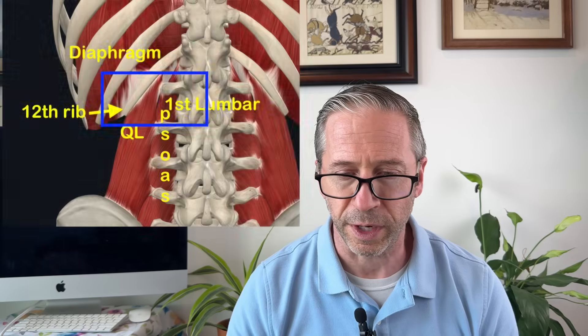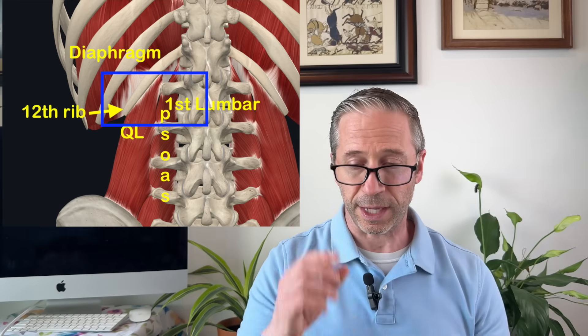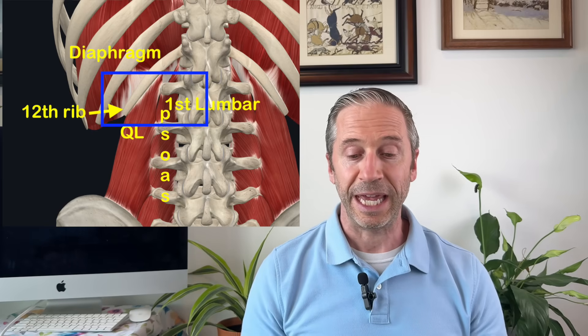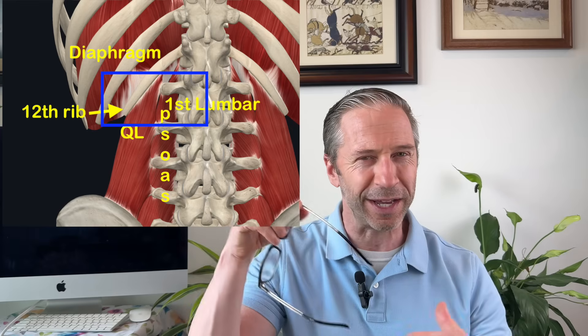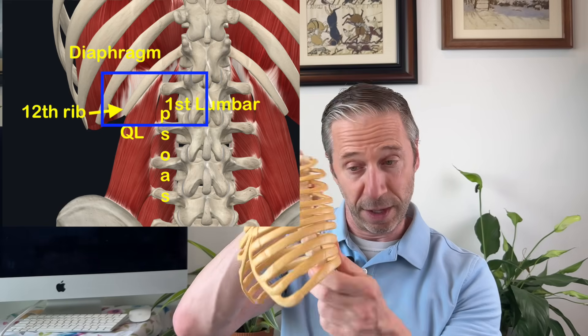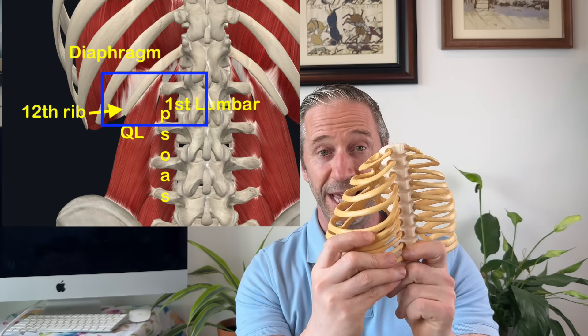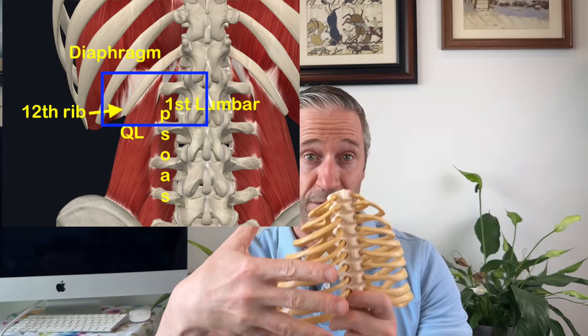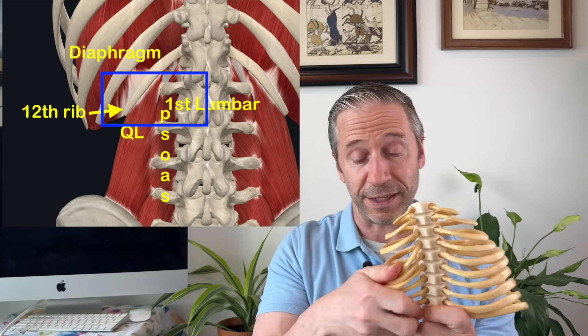The first technique is the wall-supported reach — a posture restoration technique done standing. First, understand where we're trying to expand: at the 12th rib, the psoas, QL, and diaphragm all converge. On the left side in the back, because the left back gets over-arched, the ribs in the back can get tight and come together. They need to expand so your body can shift to the left — if they stay tight they'll keep you on the right side.